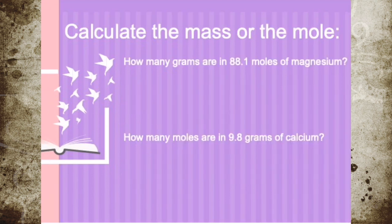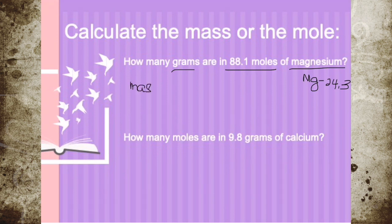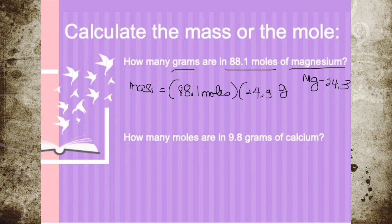Now let's take another example. How many grams are in 88.1 moles of magnesium? First, check the molar mass of magnesium on the periodic table — magnesium is 24.3 grams per mole. To find the mass: mass equals moles times molar mass, so 88.1 moles times 24.3 grams per mole. Moles cancel out, so 88.1 times 24.3 gives us 2,141 grams.